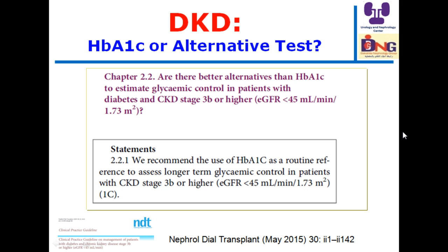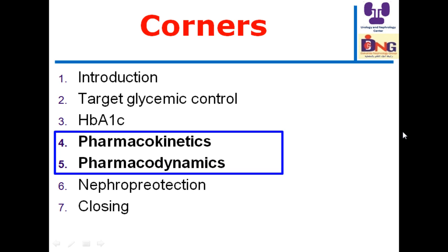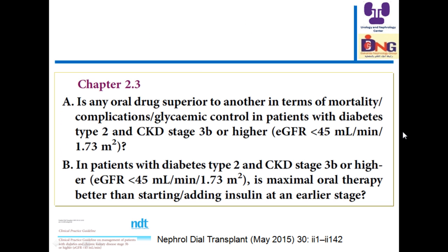The next section covers drug use from pharmacokinetic and pharmacodynamic perspectives. Pharmacodynamics refers to drug effects or side effects; pharmacokinetics covers dose, absorption, distribution, metabolism, and elimination. Two important questions are: Is any oral drug superior to another in terms of mortality, complications, or glycemic control in patients with diabetes and CKD stage 3B or higher? And is maximal oral therapy better than starting or adding insulin at an earlier stage?